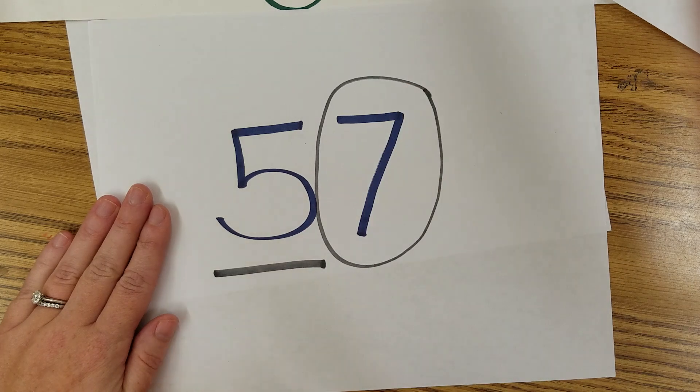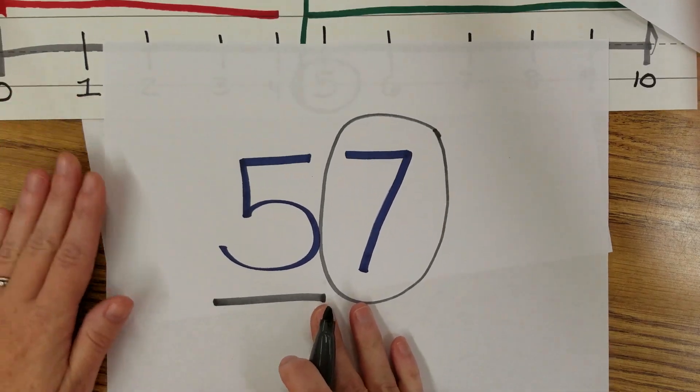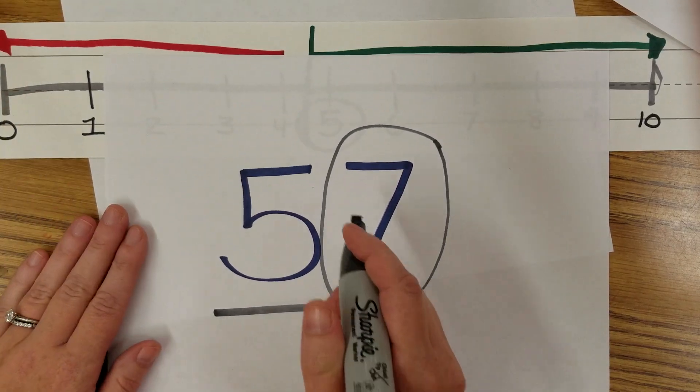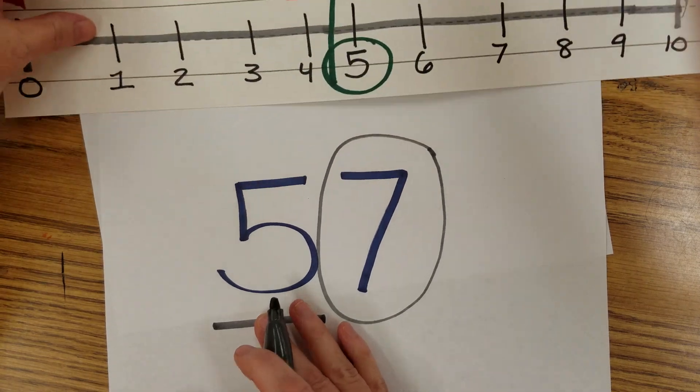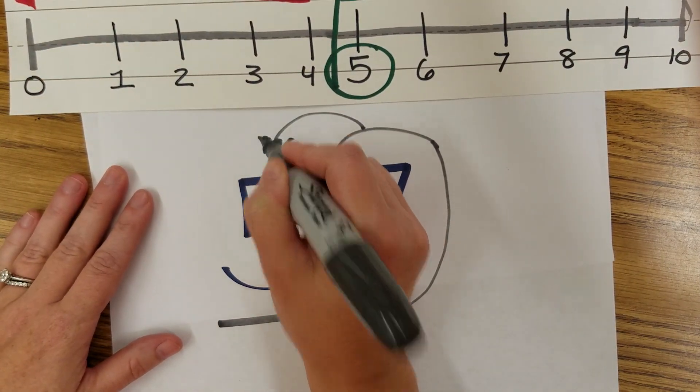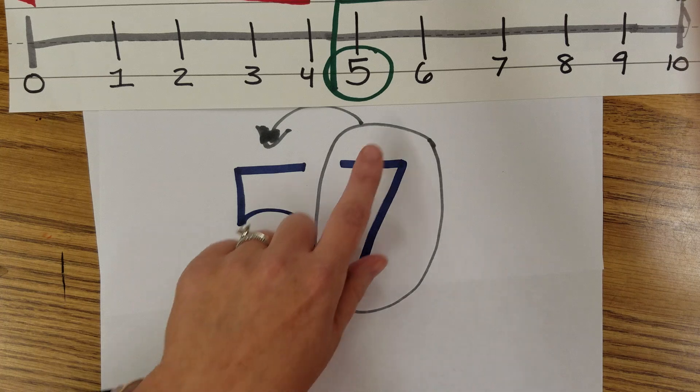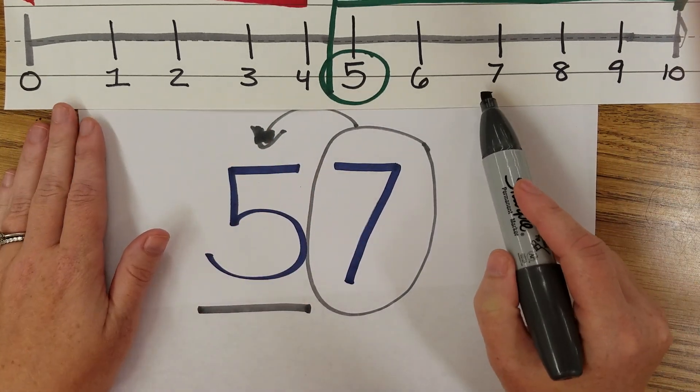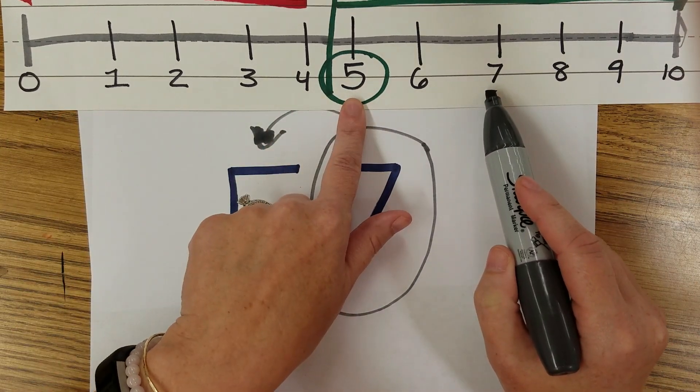The digit in the ones place value is the boss, though. That one tells it what to do. So the seven is going to tell the five what to do. Because the seven is a big number, you can see it's on this side of our number line,